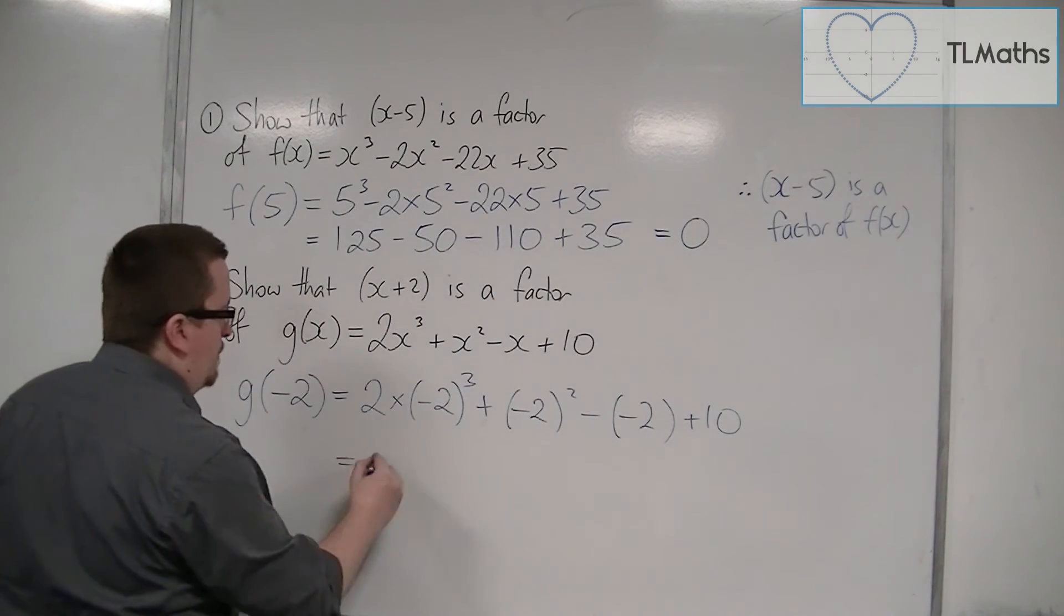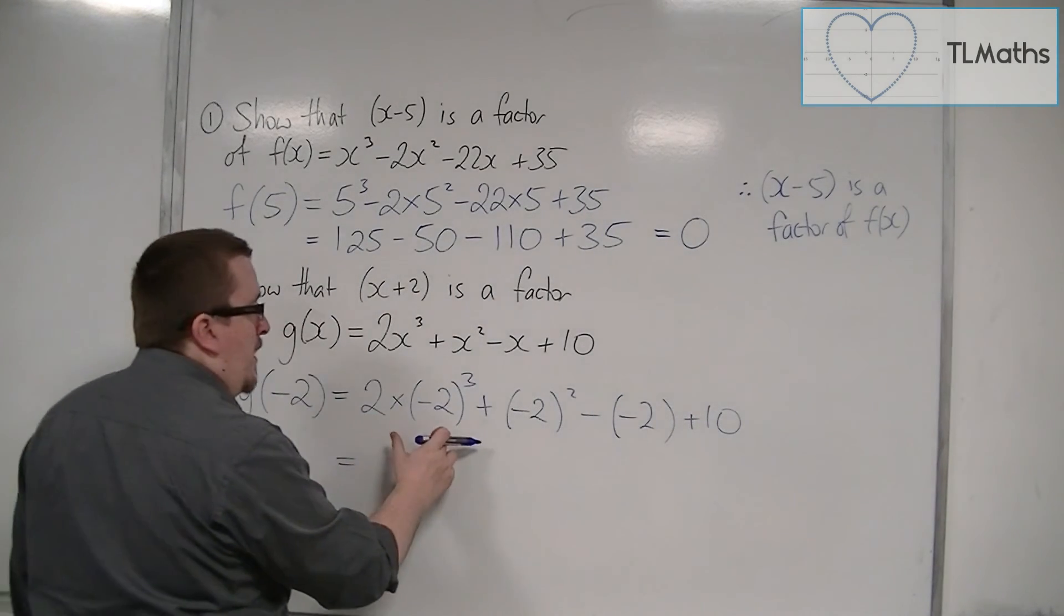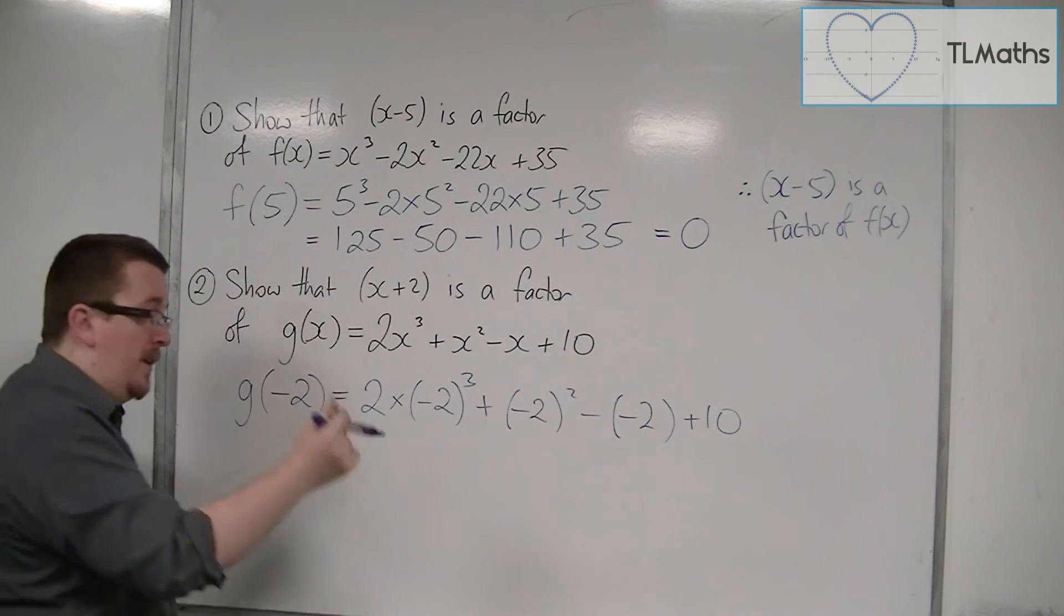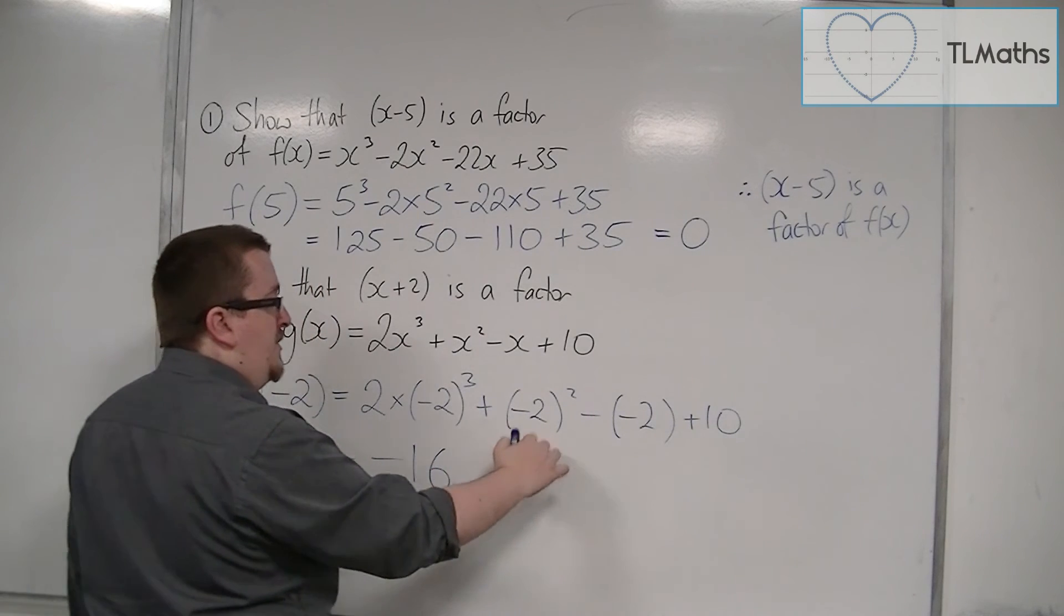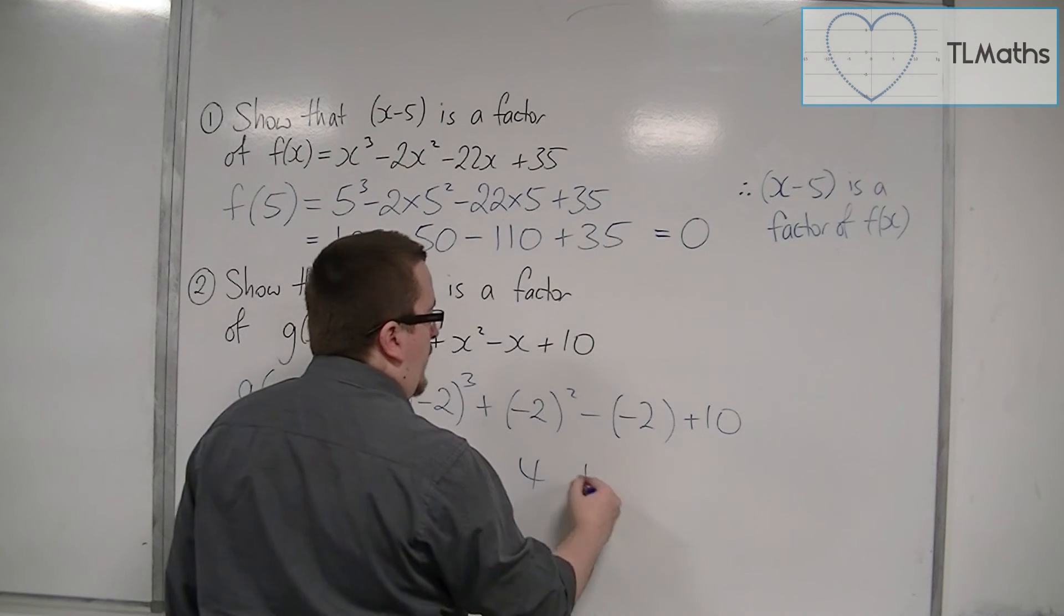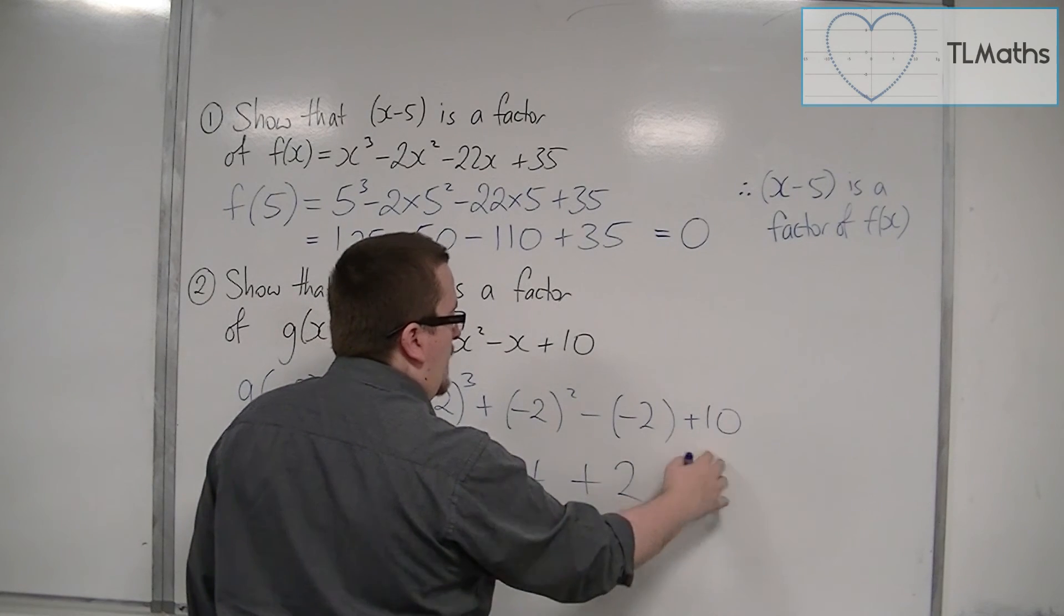So we have 2 lots of (-2) cubed, so (-2) cubed is -8. 2 lots of -8 is -16. Plus (-2) squared, so plus 4. Then we've got take away (-2), so plus 2, and then plus 10.